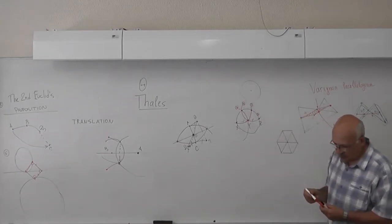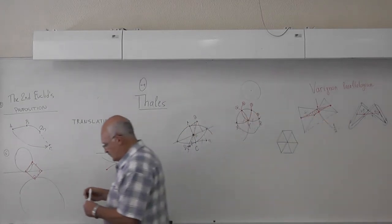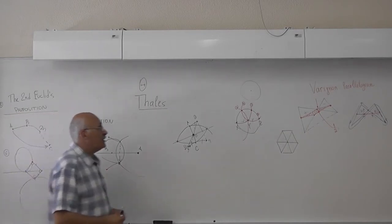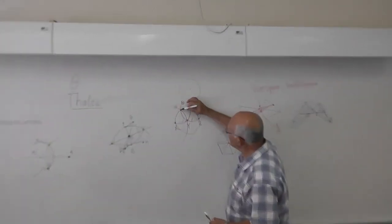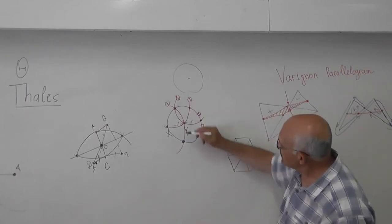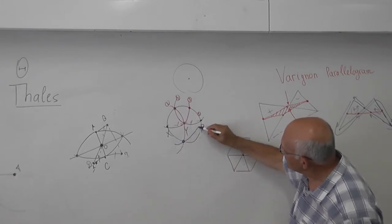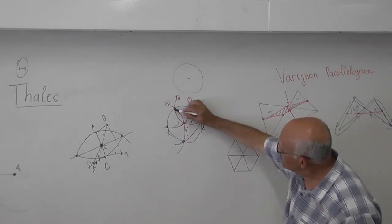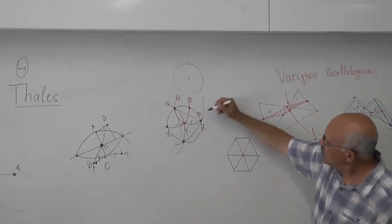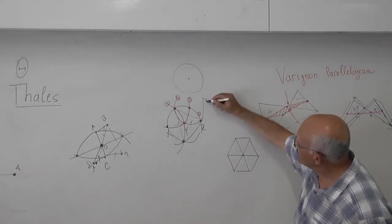But we can make a shortcut. After we get this point and this, we can take a circle with radius on this. And because this is a regular triangle, we will have point z after three circles.